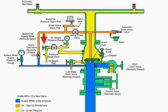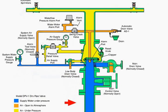The sprinkler pipe contains air under pressure, shown here in yellow. The water supply contains water under pressure, shown here in blue.